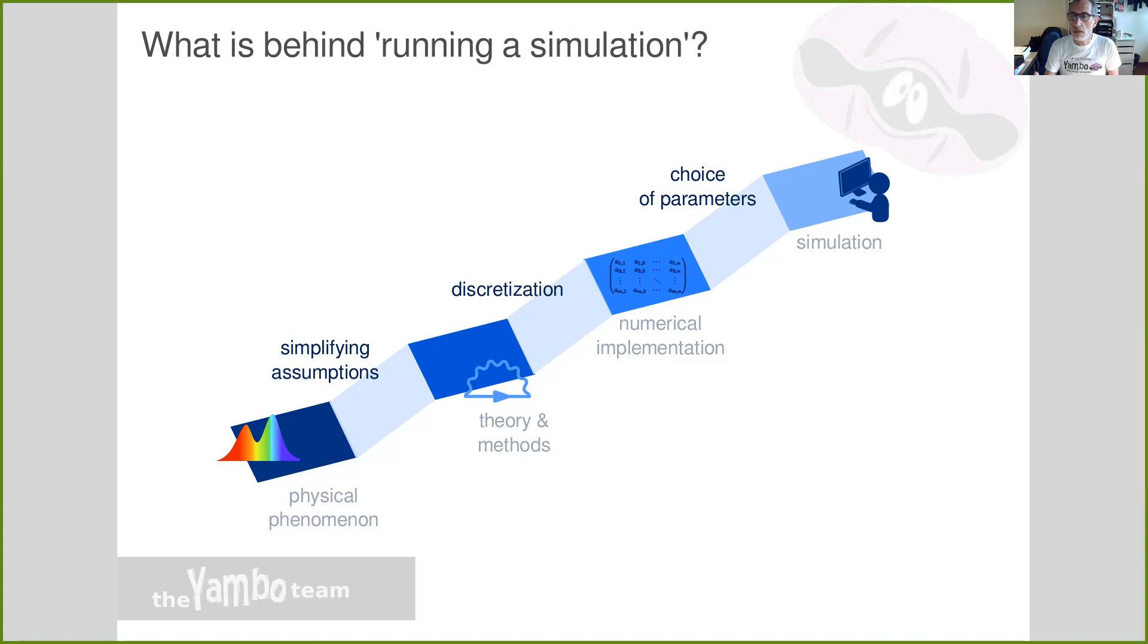So this is through a discretization in such a way that this theory will be understandable by computers. Then you need to do the numerical implementation and actual simulation. This in practice corresponds to the choice of several parameters that are consequence of the steps before discretization and assumptions. They lead to degrees of freedom in the form of parameters that you need to control and converge in order to get meaningful results.